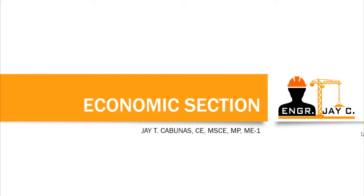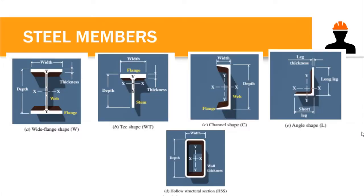In steel beam design we incorporate different types of shapes. We have the wide flange shape or W shape, which resembles the letter I — you have two horizontal members called flanges and a vertical member called the web. The depth is measured from the top surface of the upper flange to the bottom surface of the bottom flange, and each flange has an equal width with a corresponding thickness.